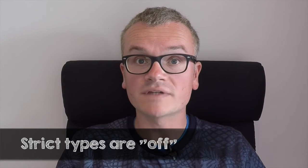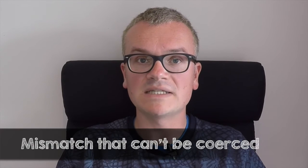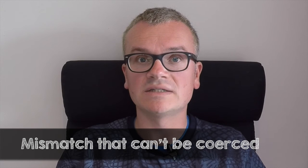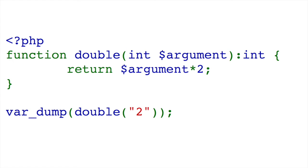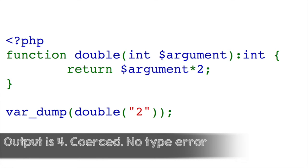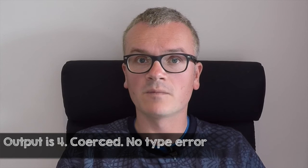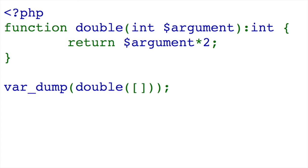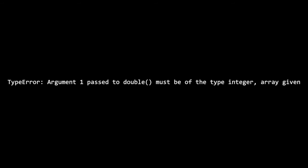When PHP 7 runs under its default strictness — that means strict types are off — type errors could still occur, and they will occur when the value is a mismatch and cannot be coerced into the required type. For example, if you have a function that takes an integer as an argument and you pass along a string that has a numeric value, PHP will easily coerce that into the desired integer. But if you pass along an array, that type error will still be thrown regardless of the declare strict_types setting.